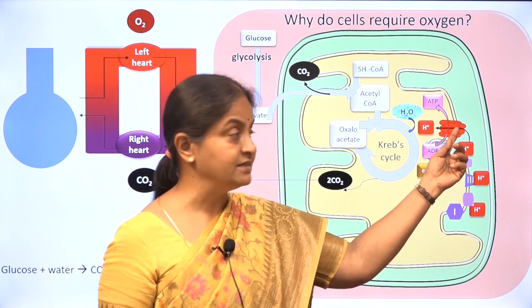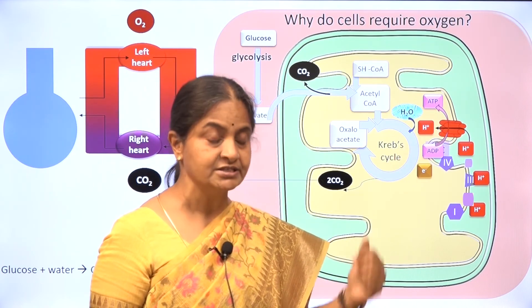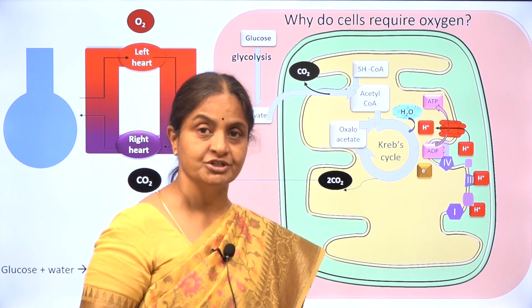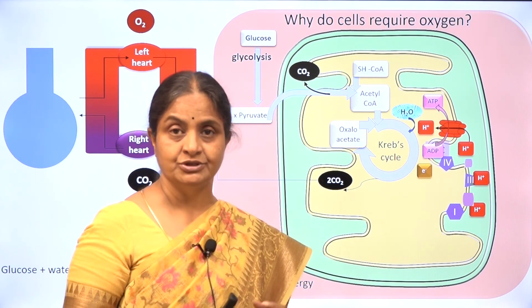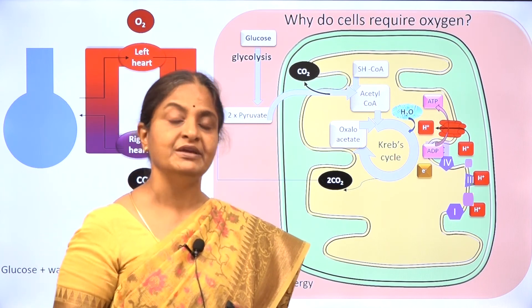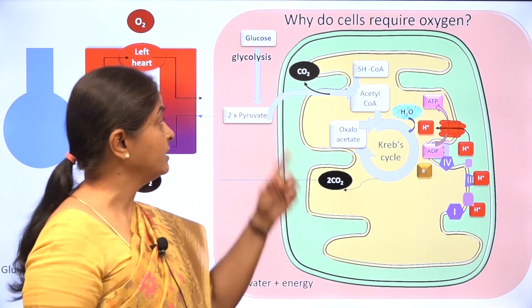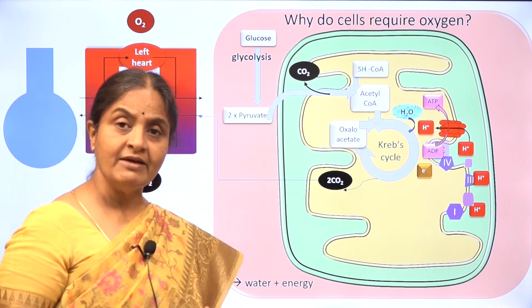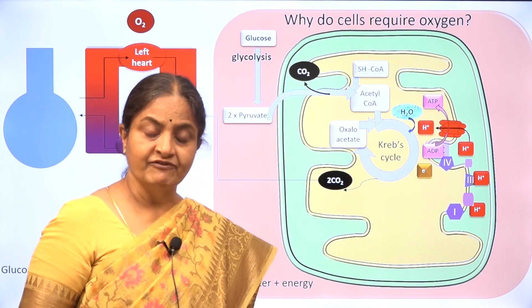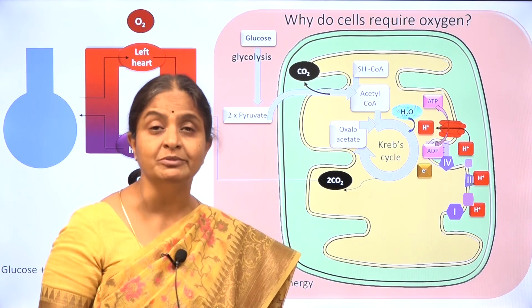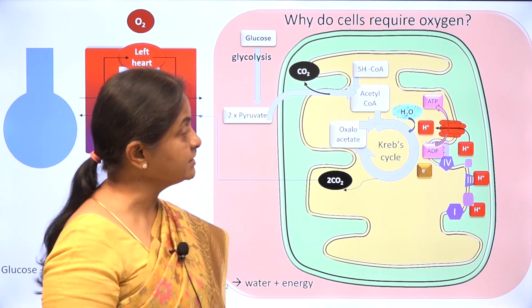ATP synthase has binding sites for ADP and phosphate, and as protons move down the energy gradient, this protein literally rotates. You could see videos of how this protein functions on YouTube, and the movement of the ATP synthase allows formation of ATP from ADP and phosphate. This is, in short, how energy is generated in the cell from glucose. We still have not seen where oxygen is required. Now, once the protons and electrons have come back into the mitochondrial matrix, they cannot be allowed to accumulate there because that will hinder further reactions. They have to be cleared from the system, and that is the job of oxygen.